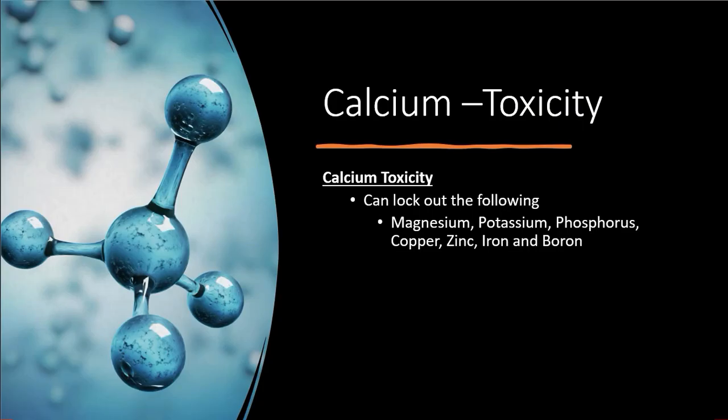Let's go to calcium toxicity. If you have too much calcium, you can lock out magnesium, potassium, phosphorus, copper, zinc, iron, and boron. So don't just start dumping calcium products into your aquaponics system, because if you get too high you'll start locking other things out. Also, if you're using a product that raises the pH, you could end up with pH getting way too high and creating further lockout issues.